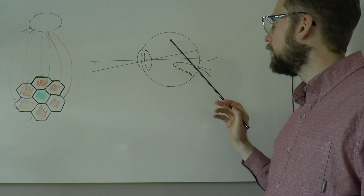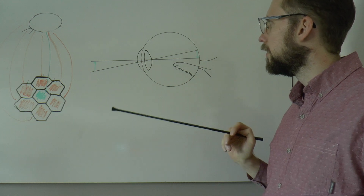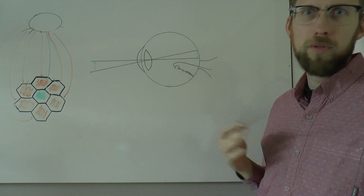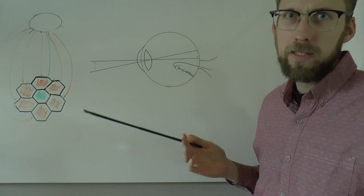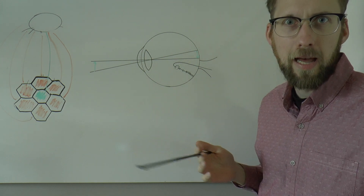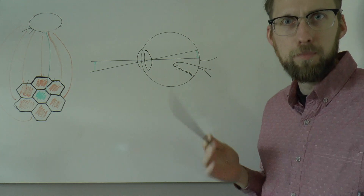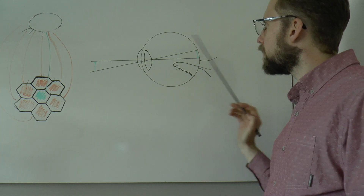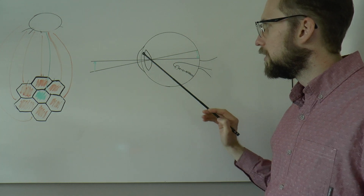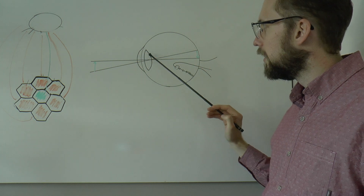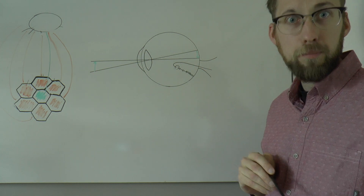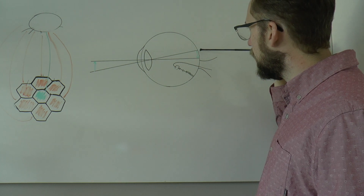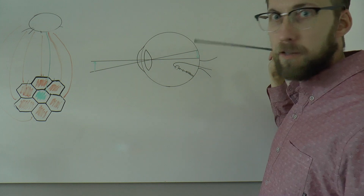Just a few things — very basic. Here we have the eye. Don't consider this to be a great anatomical drawing, because it's just to give you some basics. The eyeball — we talked about the cornea and the lens — and then here you would have a fovea.